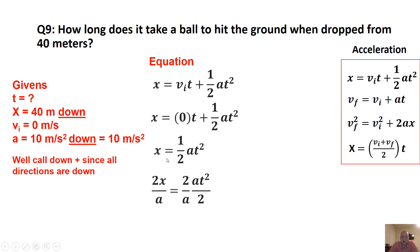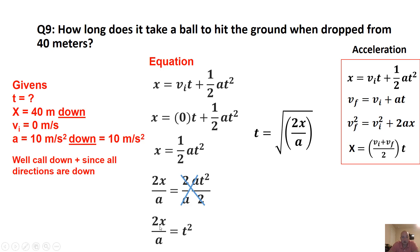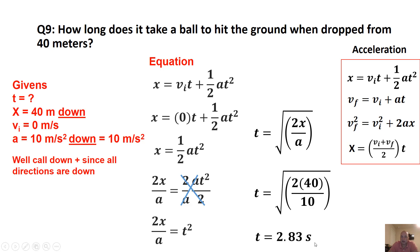Taking the square root of both sides gives T equals the square root of 2X over A. Make sure everything is inside the parentheses under the square root. There may also be a specialized formula on your equation sheet: T equals square root of 2Y over G — it's the same formula, just with Y for the vertical axis and G for gravity, and it only works when initial velocity is 0. Plugging in values gives T equals 2.83 seconds. If you got a much larger number, you likely forgot to take the square root.